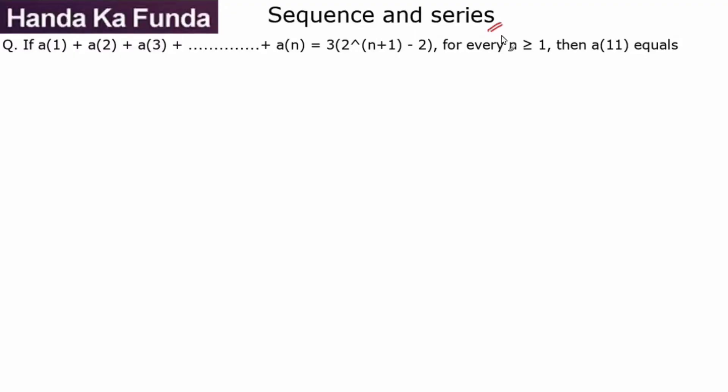Hi and welcome to another question on sequences and series. I am given a1 plus a2 plus a3 till an equals 3(2^(n+1) - 2) for every n greater than 1, and I am supposed to calculate a11.